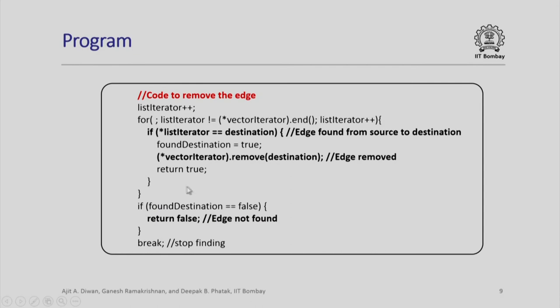Let us look at that code. You will recall the last time, the only statement we had was vector iterator dot remove destination, and that is because we presumed that when we find the destination that is to be removed, we were sure that we would find the destination. But now we are not so sure. So we will iterate, and when we iterate through this particular list, if there is a destination, we have found the edge from source to destination. We set found destination to be true and remove the edge and return true. But if found destination is false, that means somebody was trying to remove an edge which did not exist. That is why this function will return false, because the edge is not found.